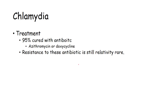The treatment of chlamydia — 95% are cured with antibiotics. Antibiotics include azithromycin and doxycycline. In chronic situations, a long-term course of antibiotics may be needed but will relieve all symptoms. Resistance to these antibiotics is still relatively rare.